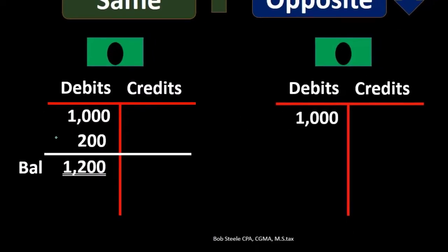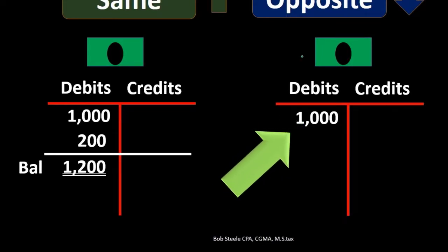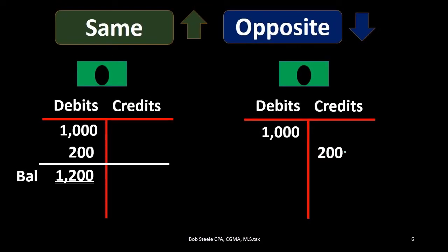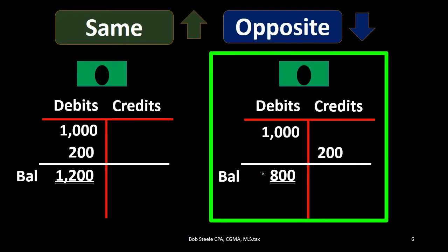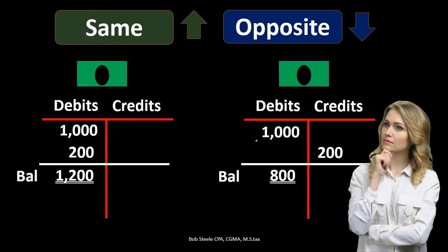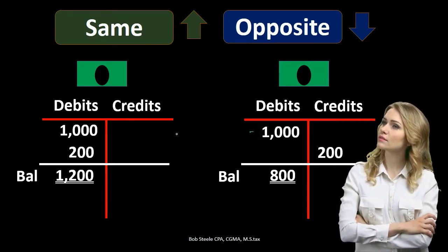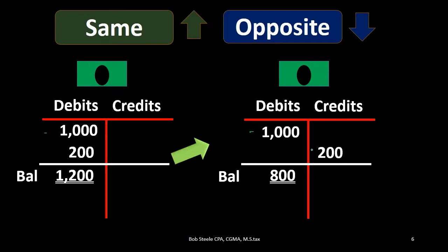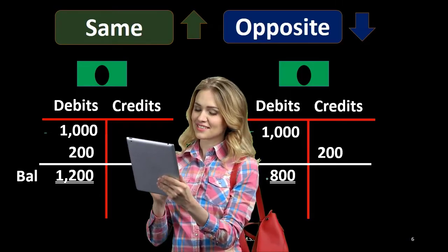Taking that same scenario with a beginning balance of $1,000 in the bank, if cash is going down — say we paid $200 for something — we do the opposite thing as its normal balance of debit and credit it. The balance becomes $800. All we're saying is debits will always win: debits minus credits leaves a debit balance of $800. If we debit a debit-balance account there are more debits by a greater margin; if we credit it, debits still win but by a lesser margin, so the debit balance goes down.